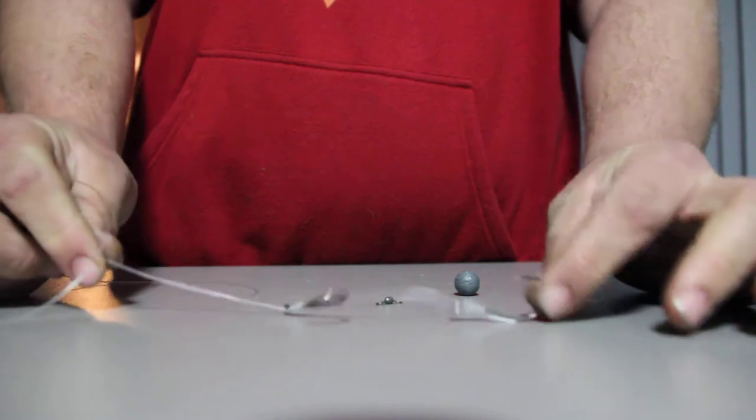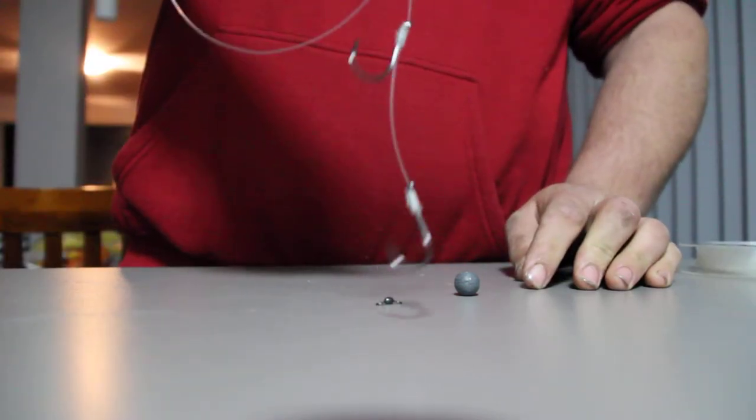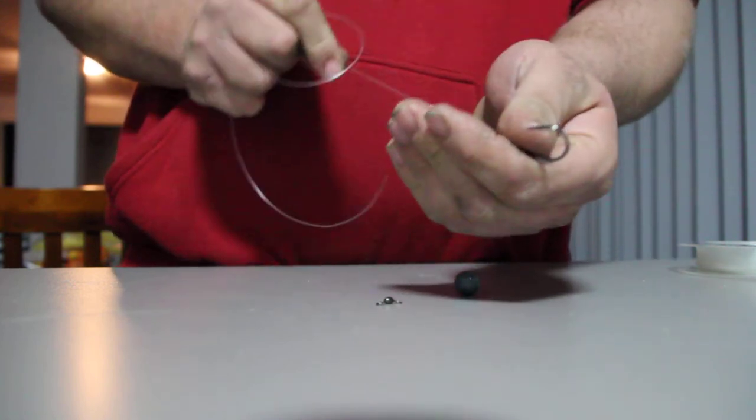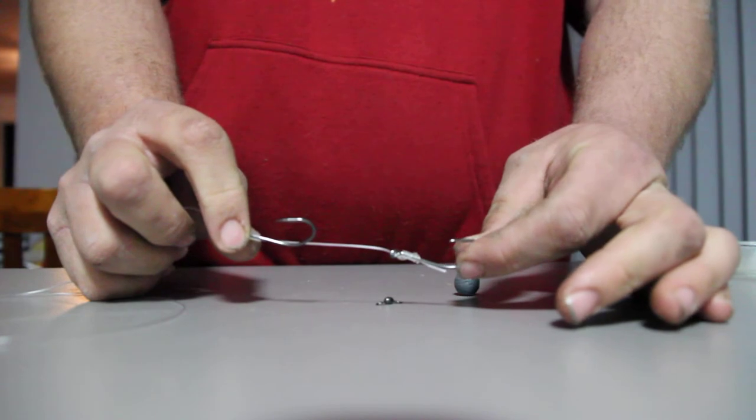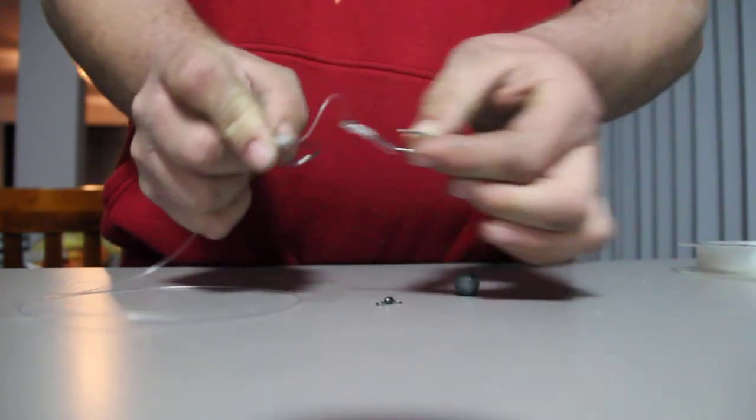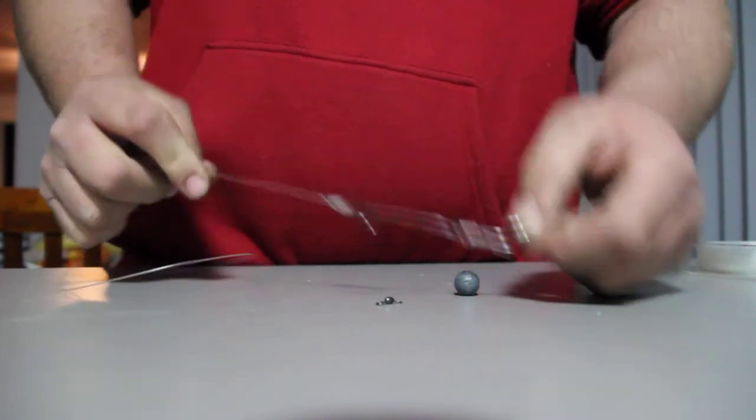There's a two-hooked Snell rig. It's a great rig for mulloway, snapper, bottom bashing as well for dhufish—everything like that. Holds baits on well. They sit nice because it's flexible, unlike gangs. The bait sits more naturally in the water.